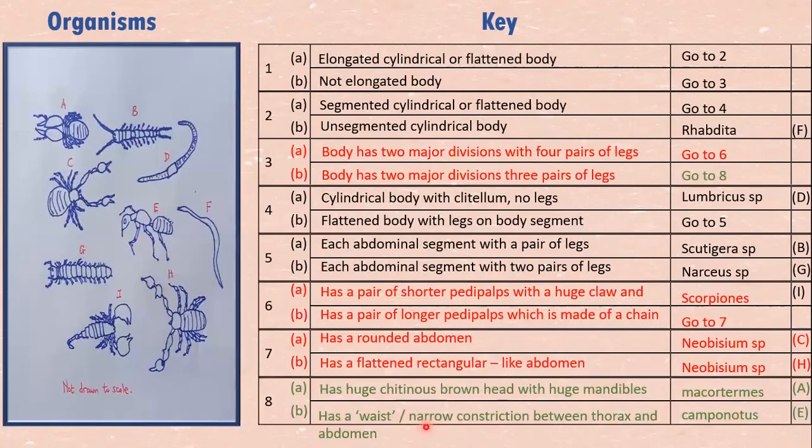And so this is how to work out a dichotomous key. Separate the two out. And when you separate the two, picking a feature, finish dealing with the feature completely. Like this feature elongated, finish dealing with elongated completely before you come to pick a feature on non-elongated body. And then the non-elongated body, there are also differences. You finish dealing with one feature before you come to draw the key for another feature. That is the trick.